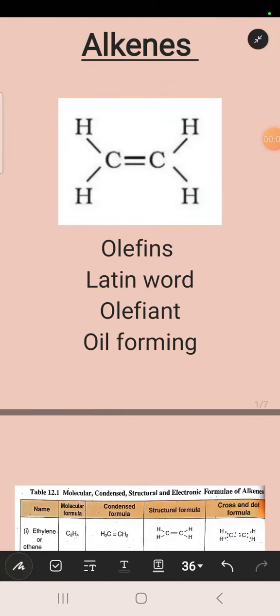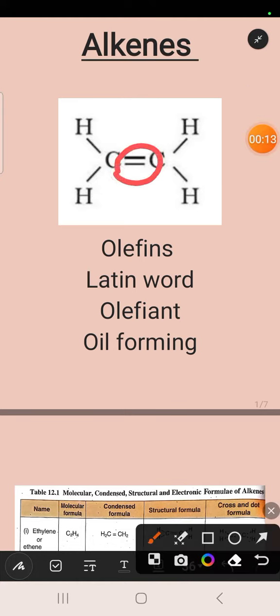Assalamu alaikum, I hope that you are all fine. Today we are going to discuss alkenes. The simplest alkene is ethene. Its formula is C2H4. It has a double covalent bond between two carbon atoms, which is why it is an unsaturated compound.